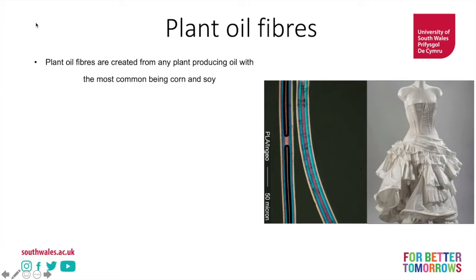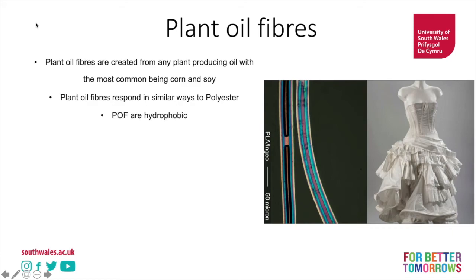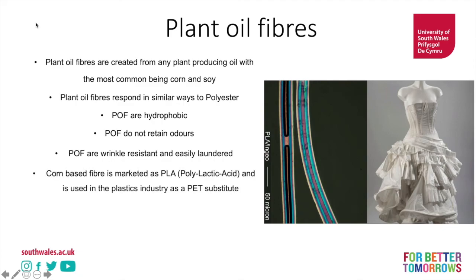The PLA fiber we're looking at is made from corn. PLA responds in a very similar way to polyester — instead of using a petrochemical fossil fuel oil base to create a plastic fiber like polyester, we're using a plant oil base. PLA fibers are hydrophobic, meaning they repel water, do not retain odors, are wrinkle resistant, and are easily laundered — all very similar properties to polyester. PLA, or polylactic acid, is used in the plastics industry as a PET substitute, and PET is the main form of plastic used to create polyester.